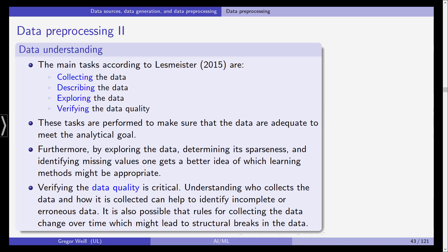Understanding who collects the data and how it is collected helps you identify incomplete or erroneous data. The data vendor might already tell you that they are rounding values or don't have access to certain data, or that sometimes for a particular variable or feature they do have some missing values. It's possible that rules for collecting the data change over time, and when this happens, this will lead to structural breaks in the data, which isn't a problem per se, but you need to be aware of this and account for it in your analysis.